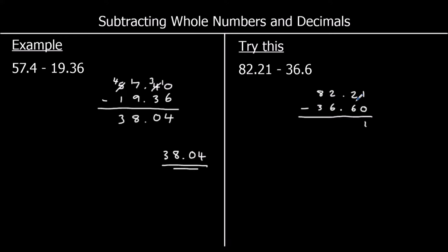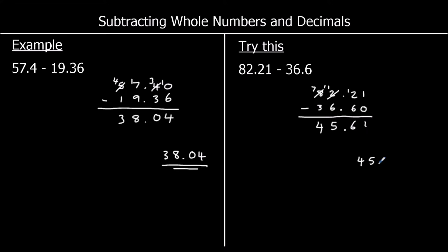In the tenths I've got two take away six — I don't want to do that, so I'll steal one from the ones, which is worth 10 in the tenths. 12 take away six is six. In the ones I've got one take away six — I don't want to do that, so I'll steal one from the tens, worth 10 in the ones. 11 take away six is five. And the tens: seven take away three is four. So the answer is 45.61.